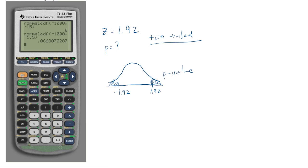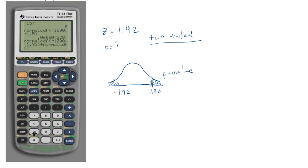Using second entry to avoid retyping, I'll put in normCDF(-1000, -1.92) plus normCDF(1.92, 1000) — where positive 1,000 represents positive infinity. The p-value comes out to 0.05486.